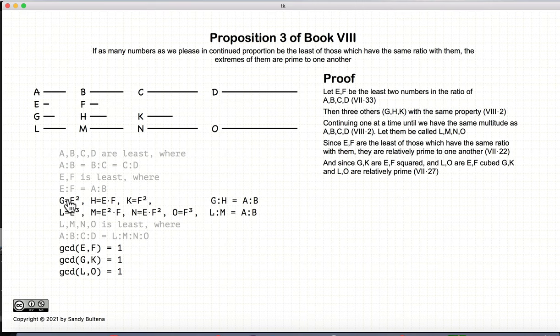And since G and K are squares of E and F, and L and O are cubes of E and F, we have also that G and K are relatively prime, and L and O are relatively prime. And again, that's from Proposition 27 of Book 7.